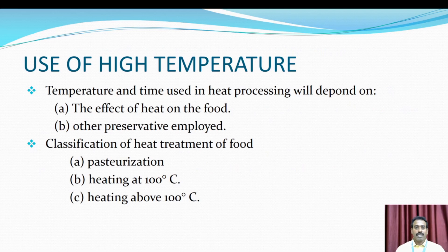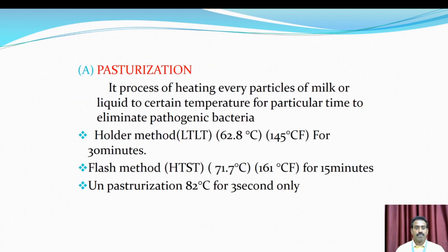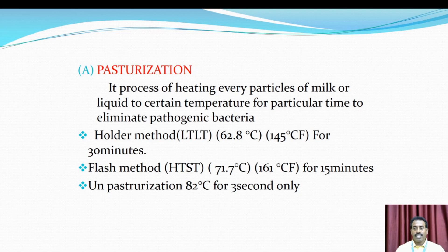Use of high temperature: the temperature and time used in heat processing will be determined by the effect of heat on the food and other preservatives employed. The classifications of heat treatment of food: first, pasteurization — heating at below 100 degrees Celsius. Pasteurization is the process of heating every particle of milk or liquid to a set temperature for a particular time to eliminate pathogenic bacteria. The holding method — low temperature long time — is 62.8 degrees Celsius for 30 minutes.